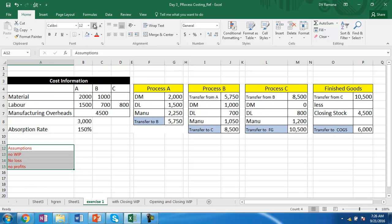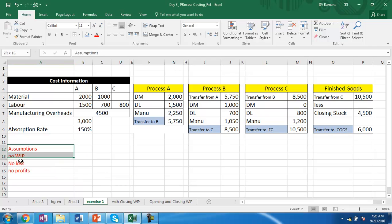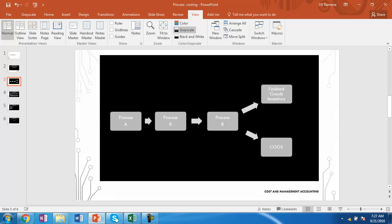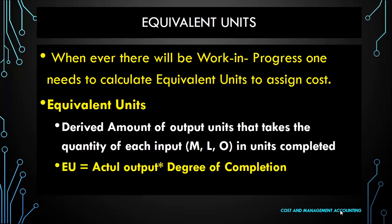With the assumptions of no work in progress, no loss, and no profits between the departments or processes, the process accounts look like this. Now, in case of the presence of work in progress — meaning partly finished goods at a particular process — whenever there is work in progress, one needs to calculate equivalent units or equivalent production before assigning the cost. Equivalent units are the derived amount of output units representing the quantity of each input in completed units. For each component of cost, we find the equivalent units.